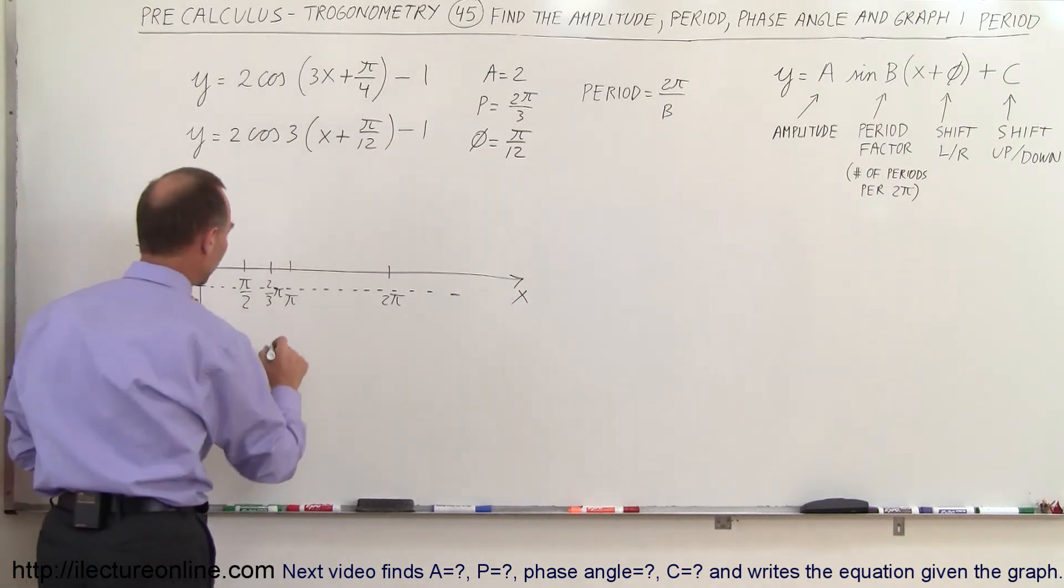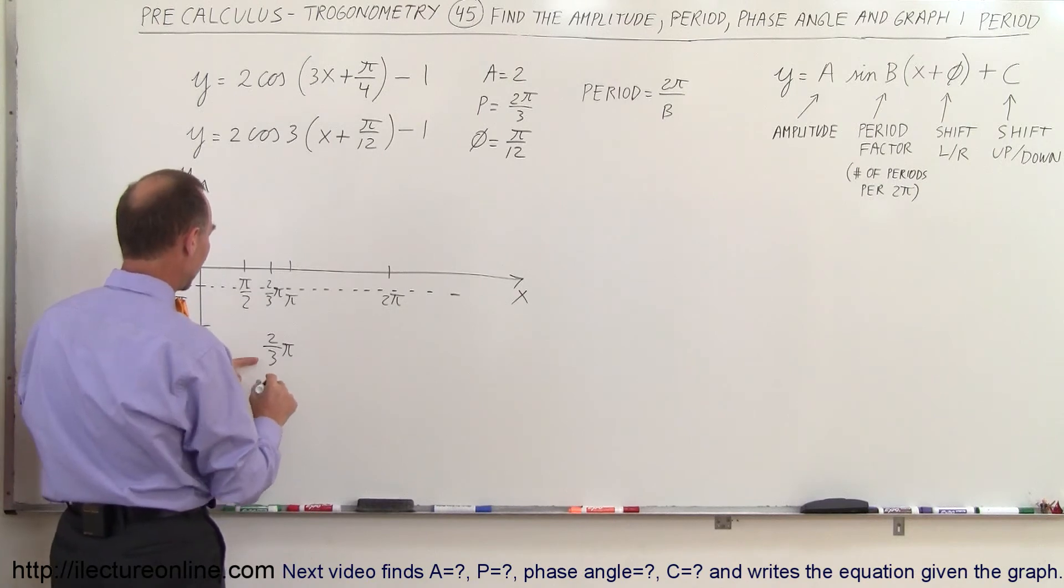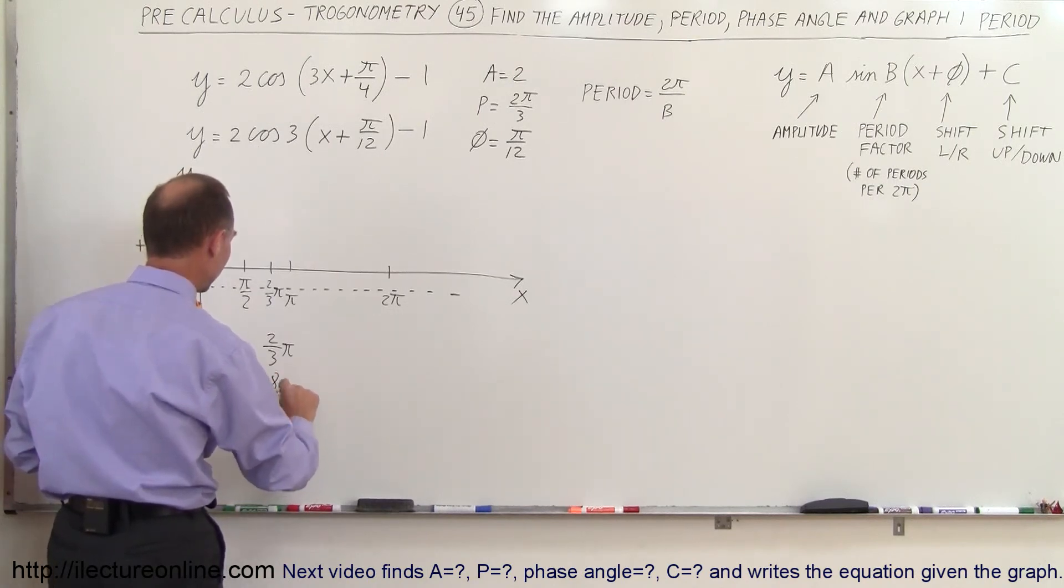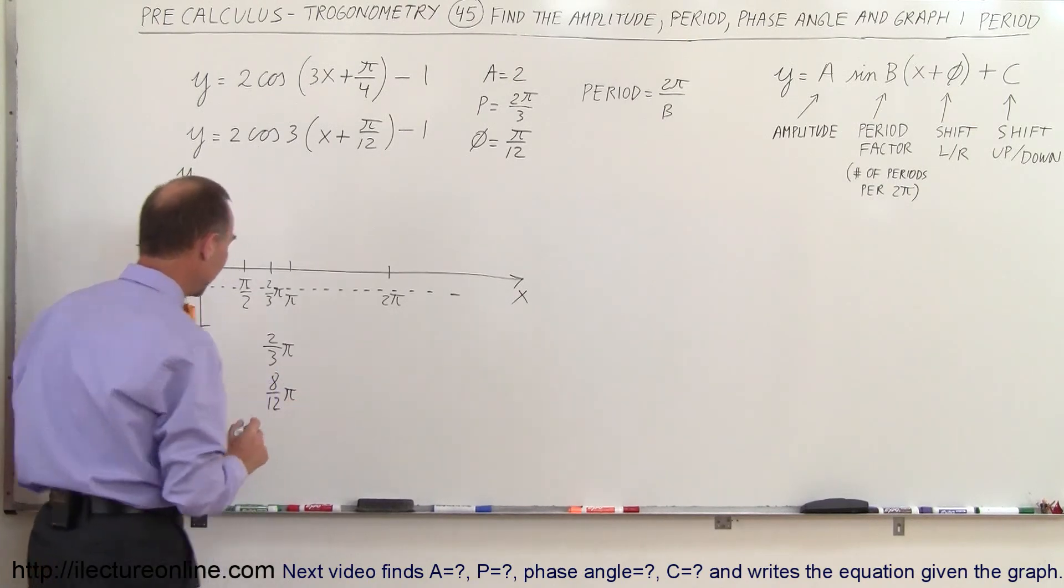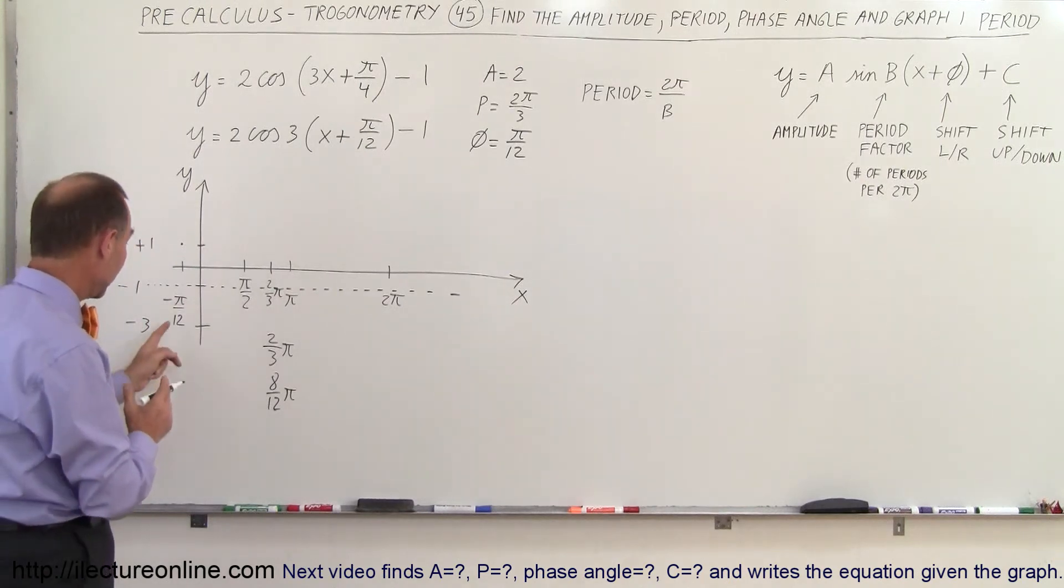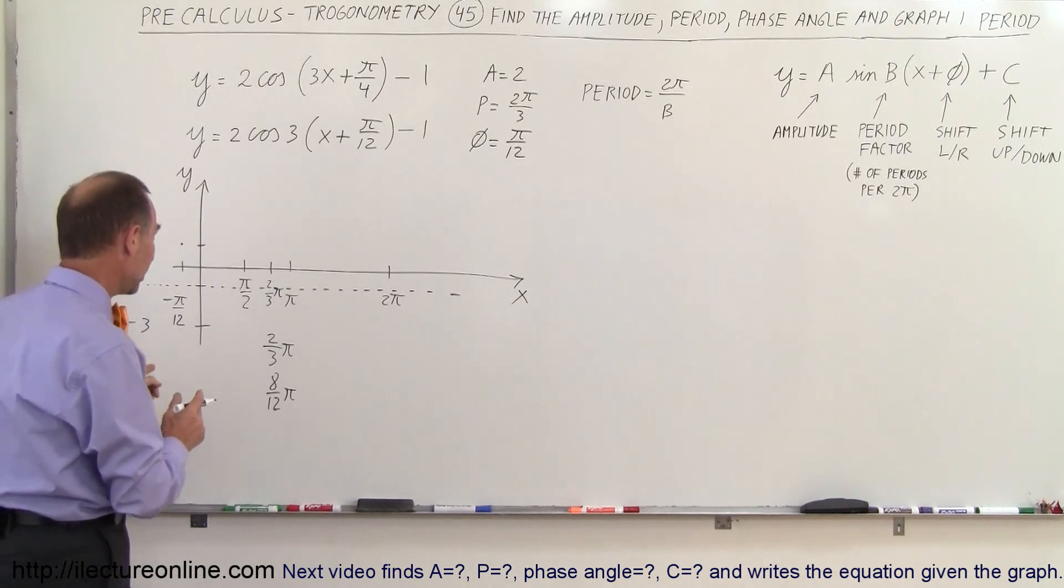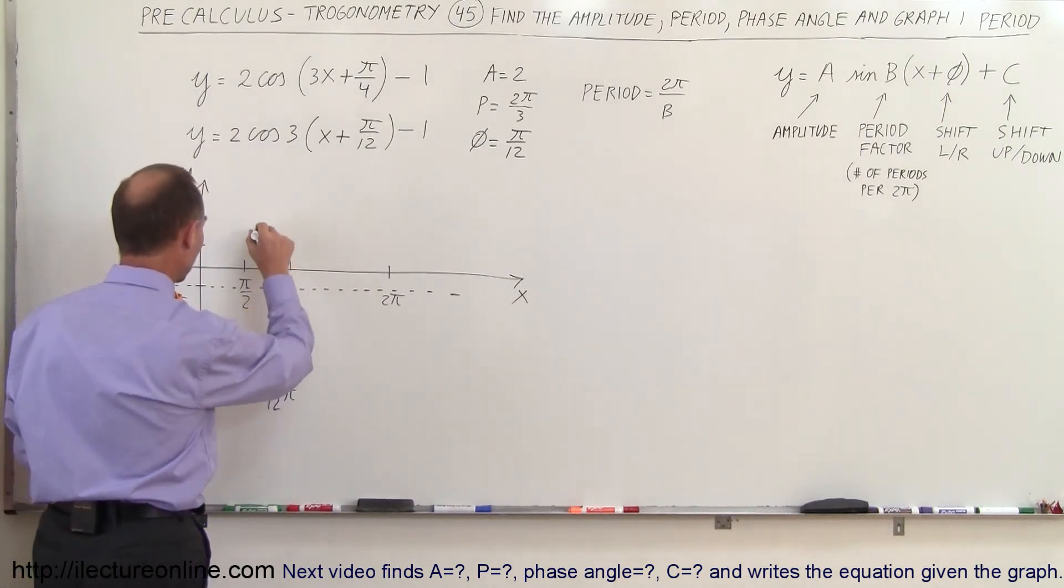So 2 thirds π is the same as 8 over 12 π like that and since it shifted to left by 1 π over 12 so then I want to find the place where it's 7 π over 12.